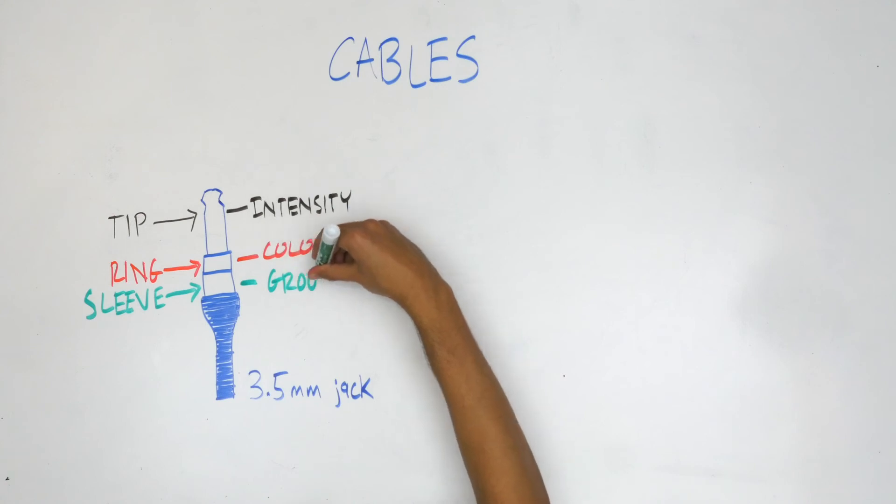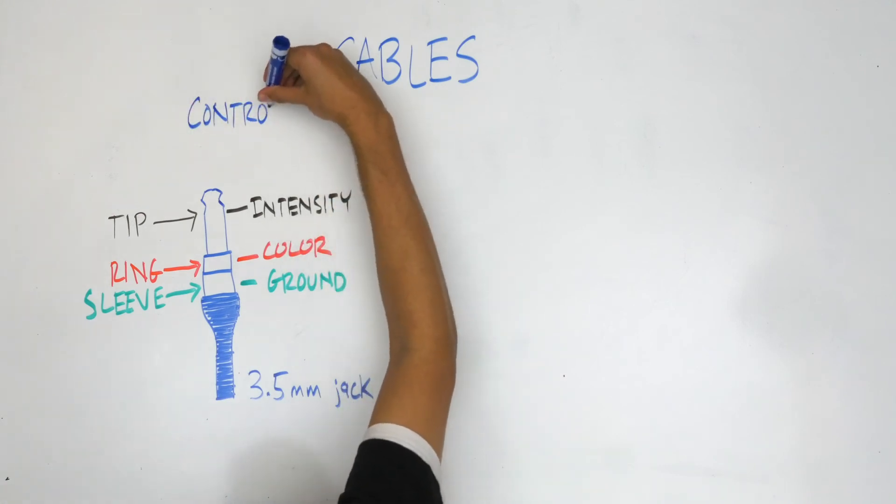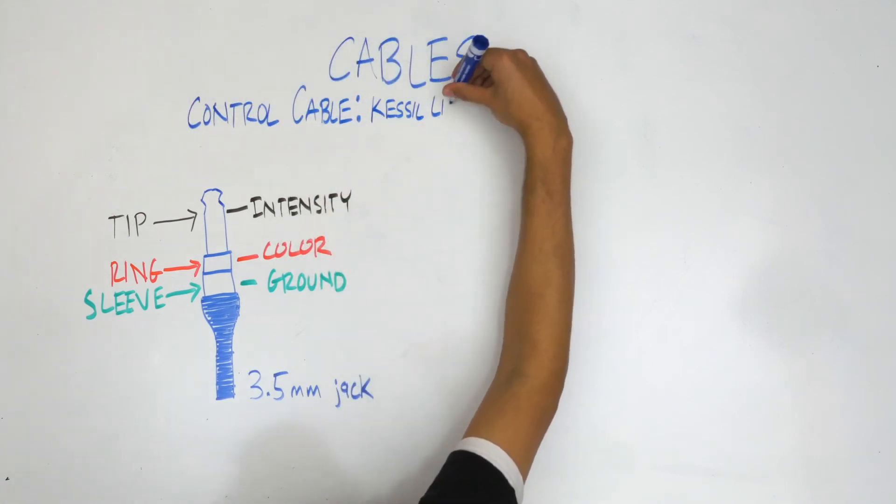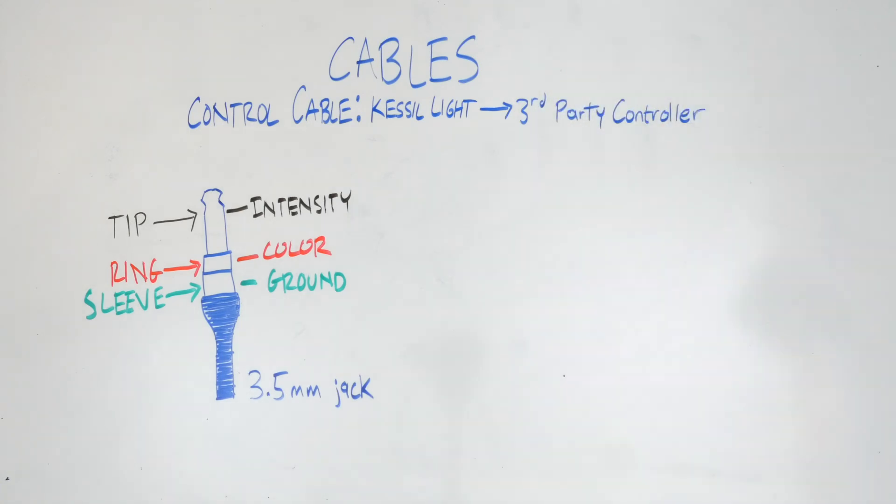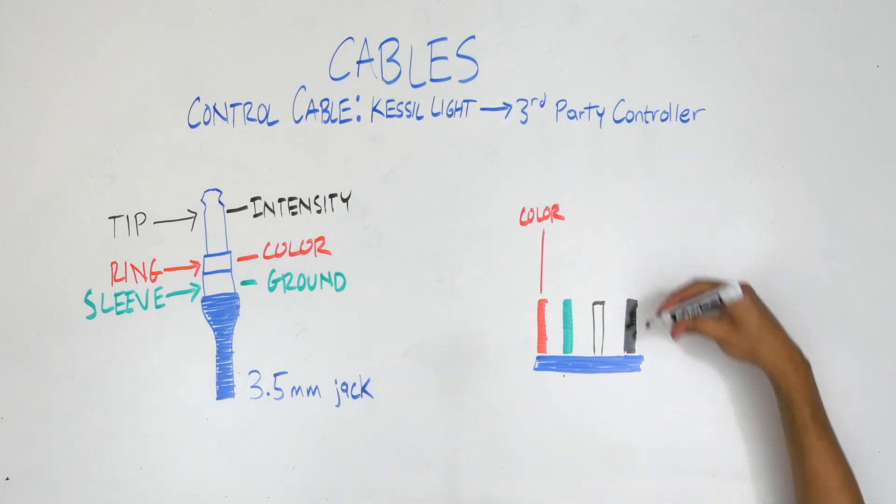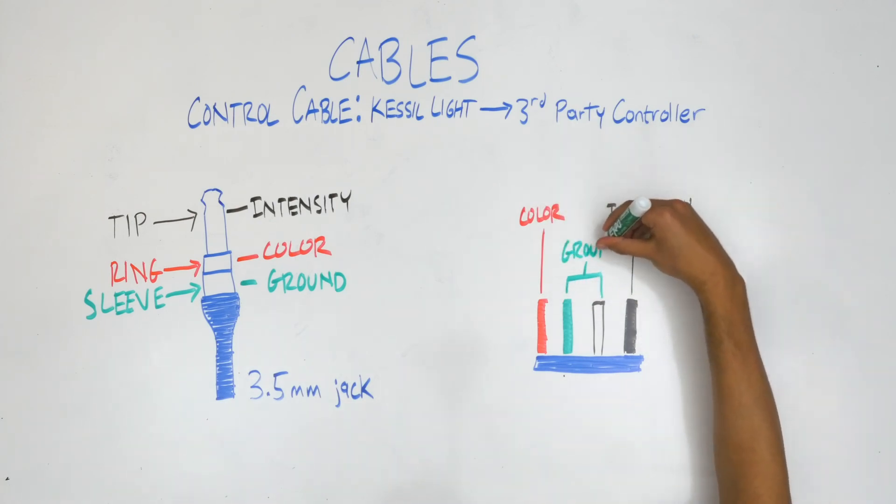The control cables, each 6 feet long, connect the A80 tuna blue to third-party controllers. In each of these cables, the red wire corresponds to color, the black wire corresponds to intensity, and the green and white wires are both ground. The control cable type 1 is compatible with Neptune Apex and other RJ45 units, and the control cable type 2 is compatible with breakout boxes among other devices.